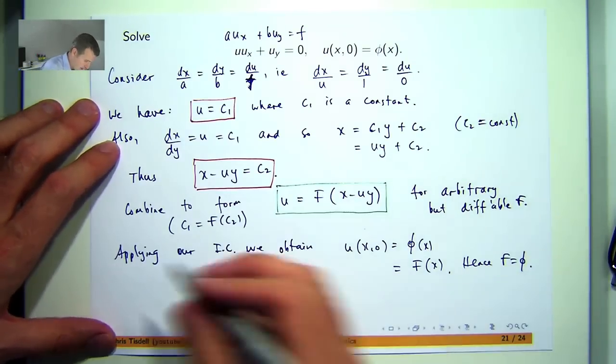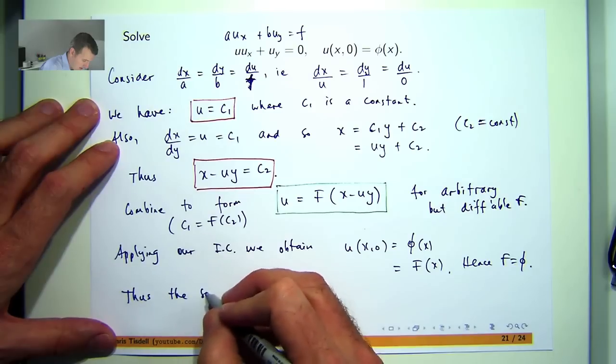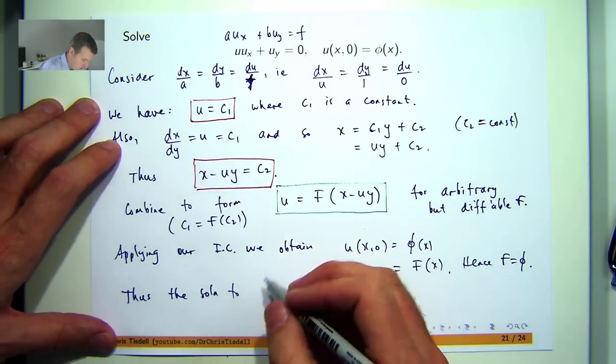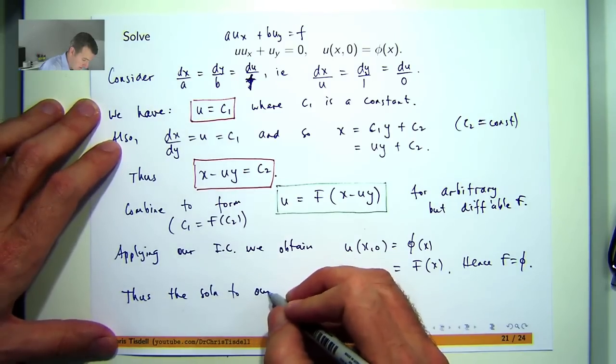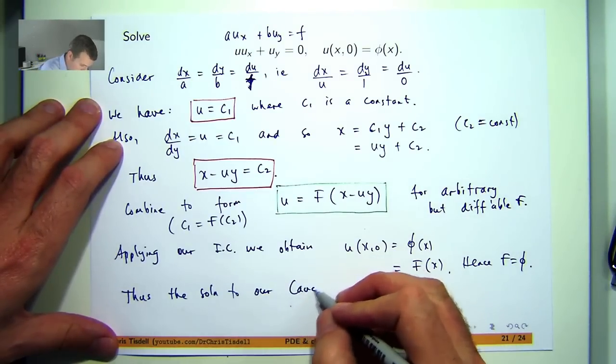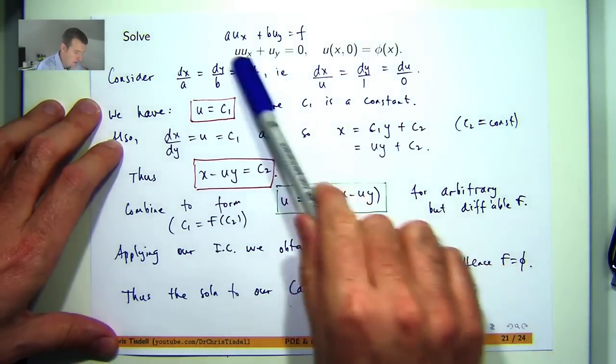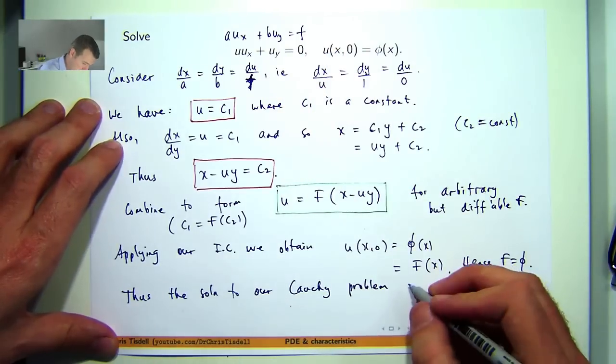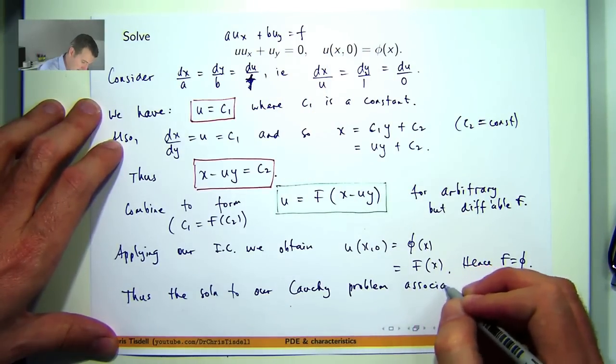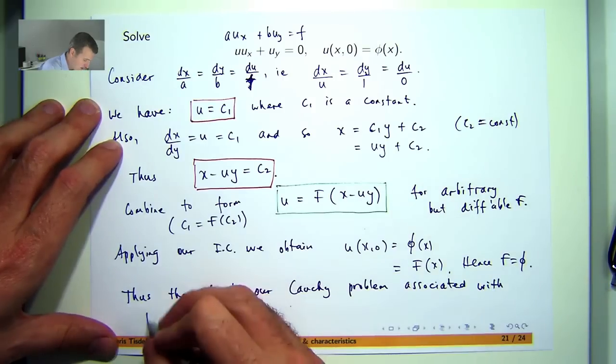That's the solution to our Cauchy problem. A Cauchy problem is just a PDE and some sort of initial condition associated with Burger's equation.